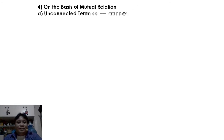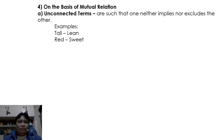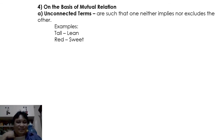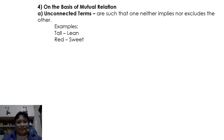Number four: on the basis of mutual relation. Unconnected terms are such that one neither implies nor excludes the other. For example, talking about 'tall' while another refers to 'lean'; or discussing President Duterte's foreign policy while someone says he is a member of the NPA — there's no connection. That is what we call unconnected terms.